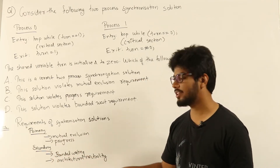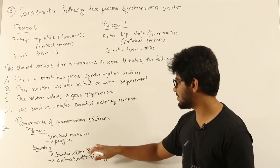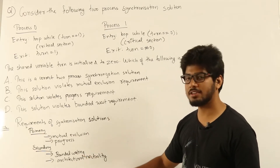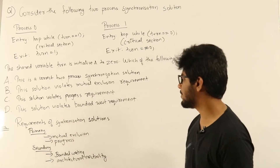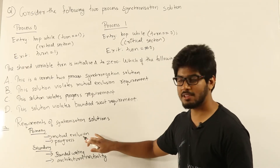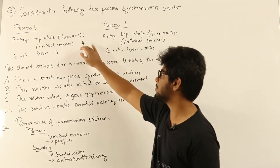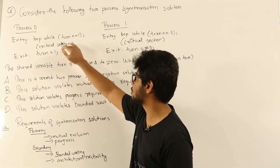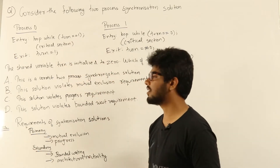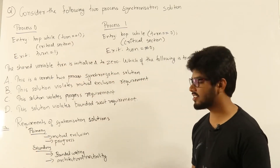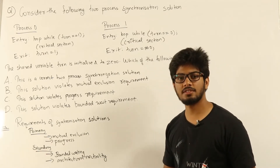The secondary properties — bounded waiting and architectural neutrality — are optional. If we have these two as well, then our solution is a better solution. But even if these two are not there, it is still fine — we can call it a synchronization solution. The two we absolutely need are mutual exclusion and progress. Mutual exclusion means at any point, two processes should not enter the critical section simultaneously; only one process should be able to enter the critical section.